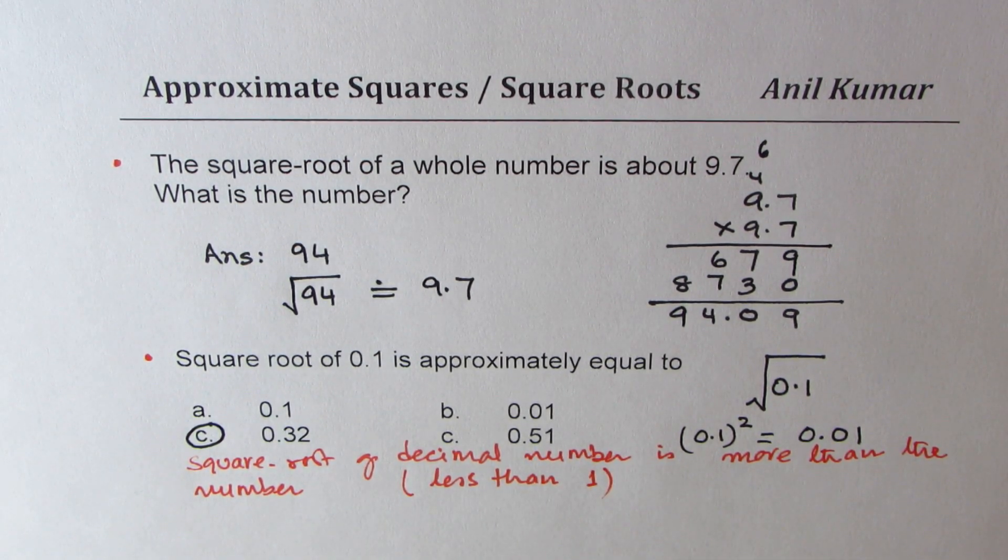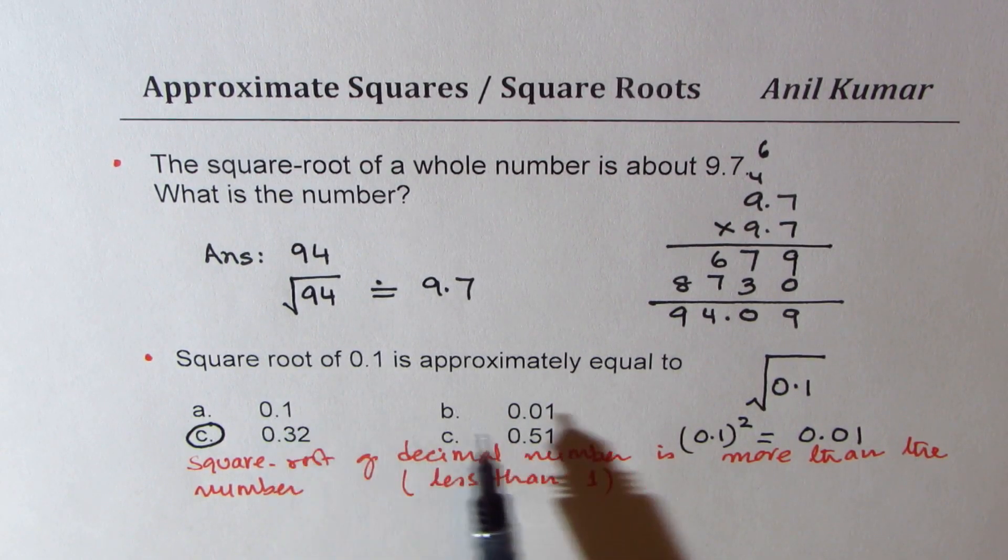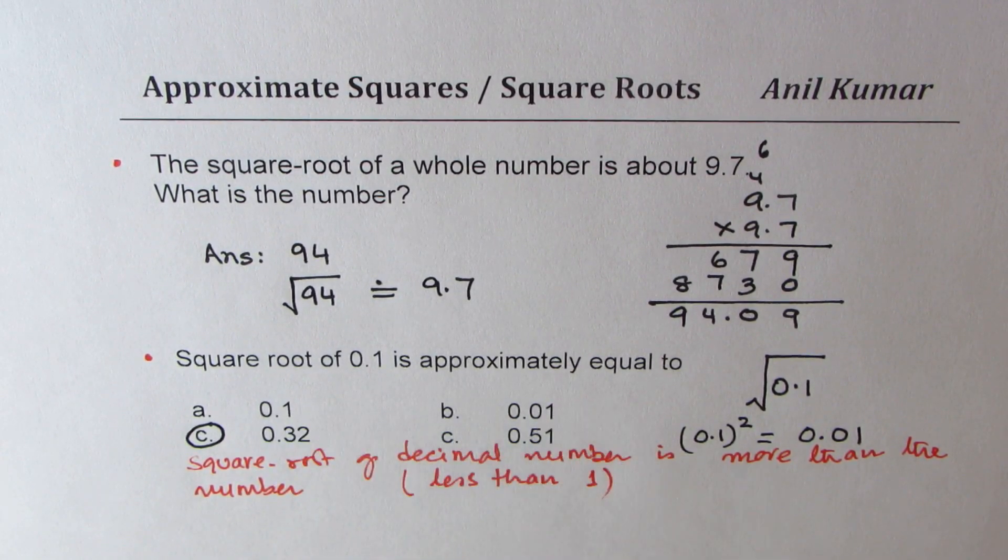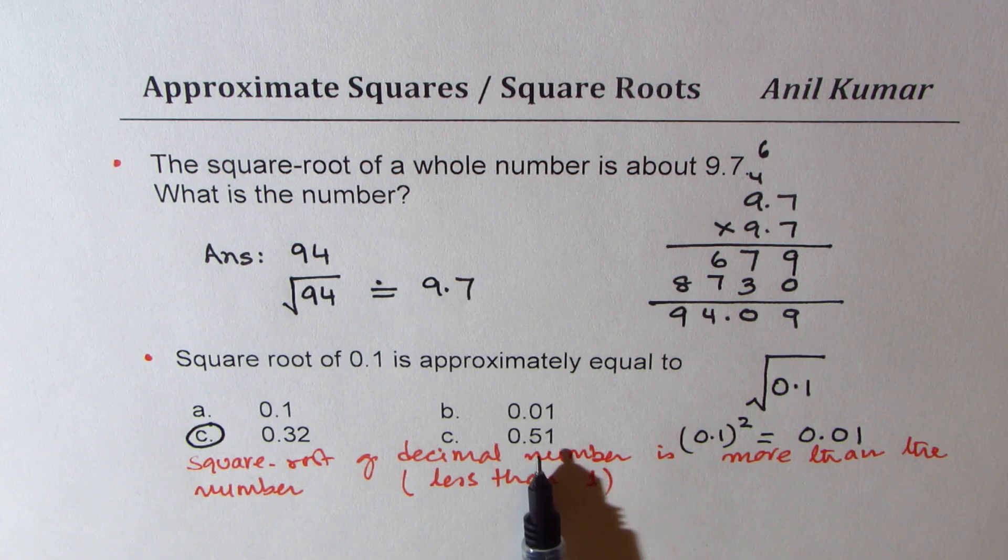So square root of a number which is less than 1 is actually bigger than the number itself. So that way also you could eliminate these two answers, so these are not your answers, correct.